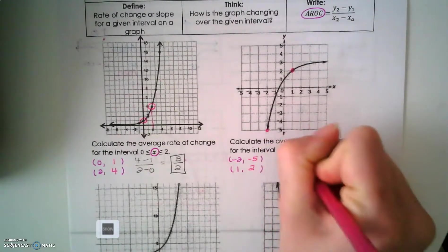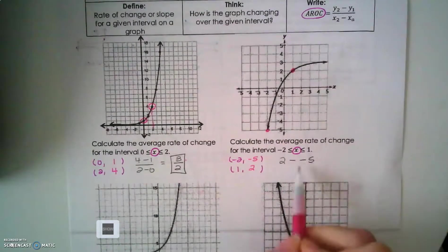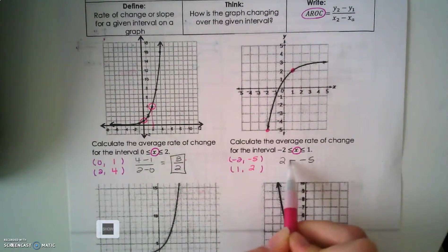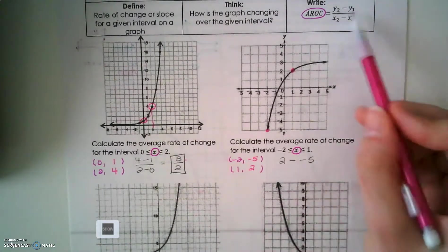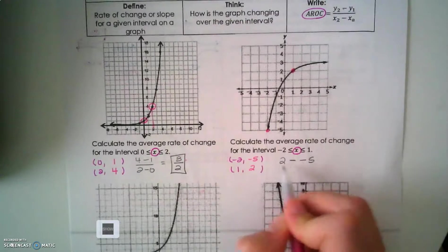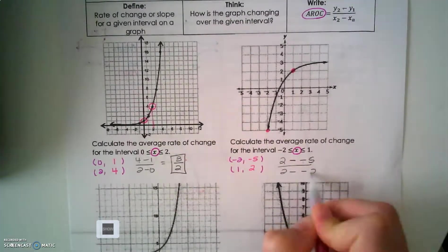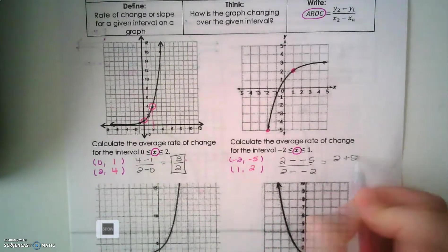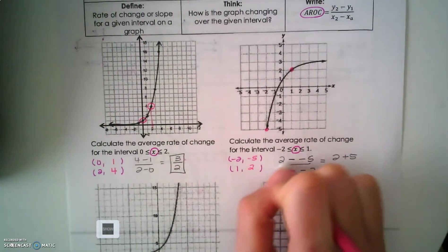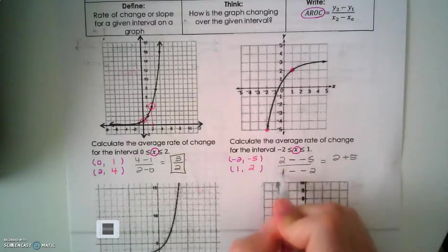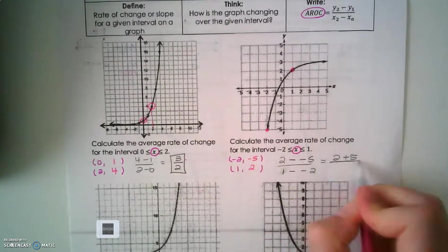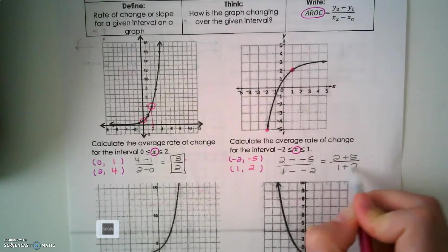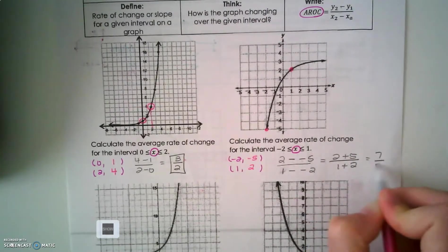So now I'm going to use my slope formula. 2 minus a negative 5. Don't forget that the subtraction sign is already in your slope-intercept form. So minus a negative all over 2 minus a negative 2. So that's 2 plus 5, and I'm sorry, this should be a 1. 1 minus negative 2 all over 1 plus 2. So that's 7 thirds.